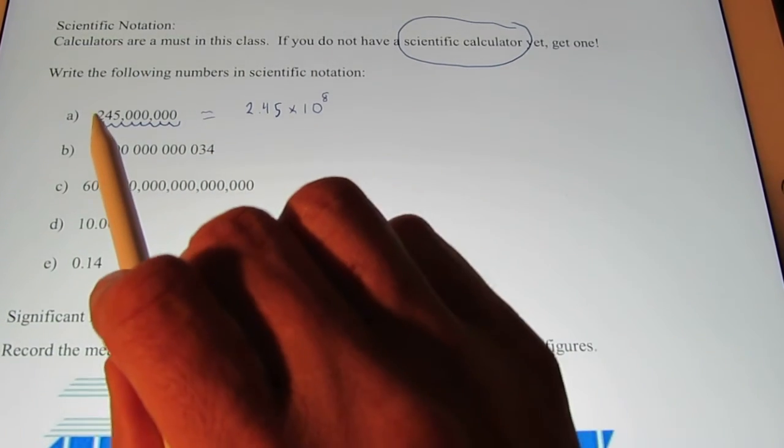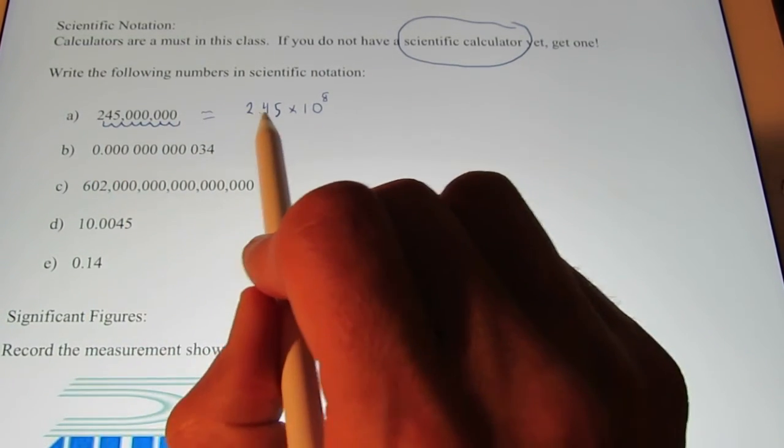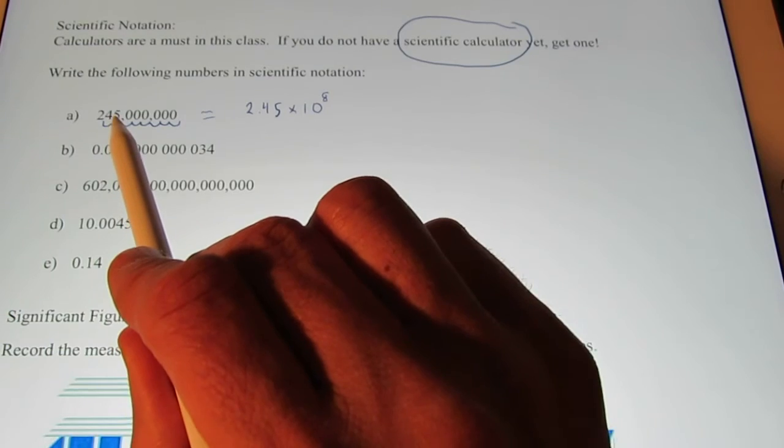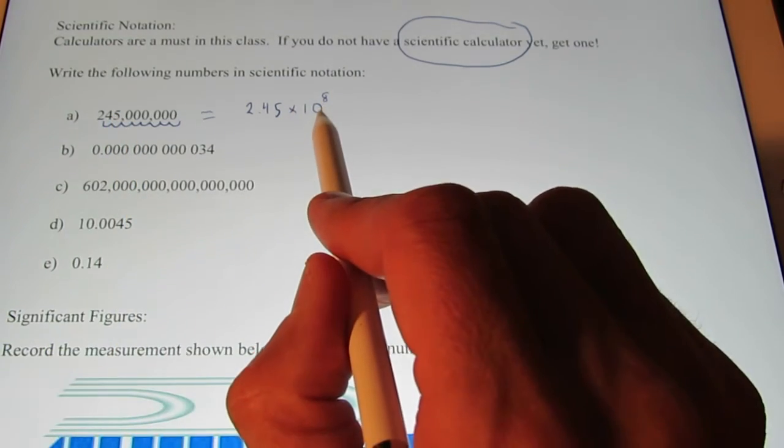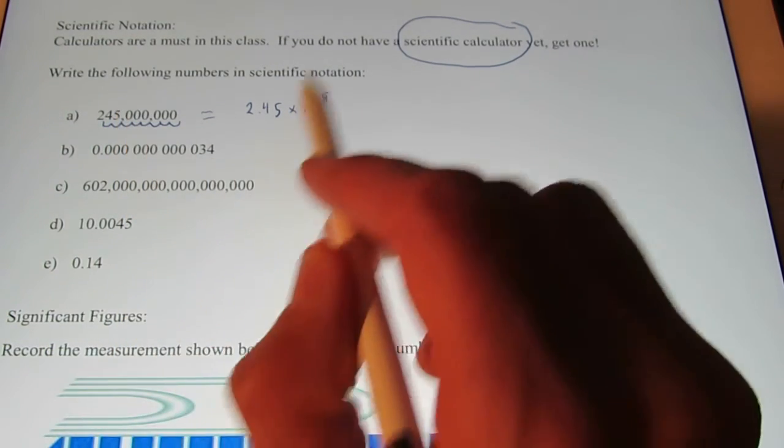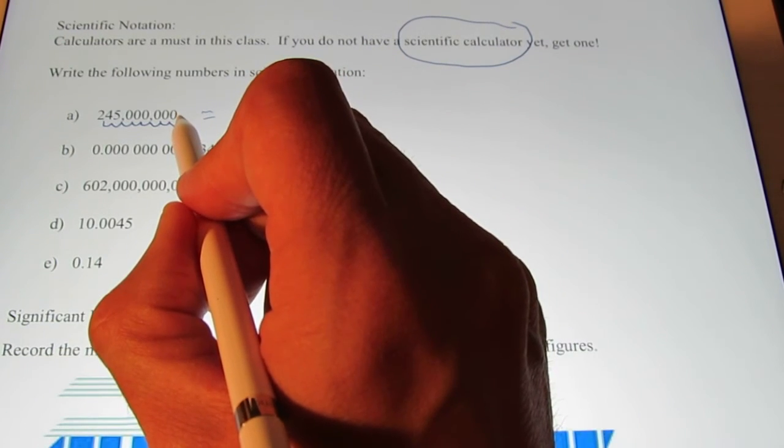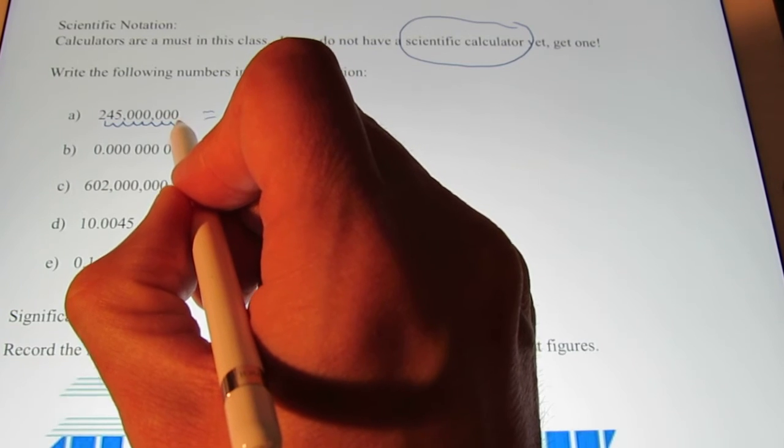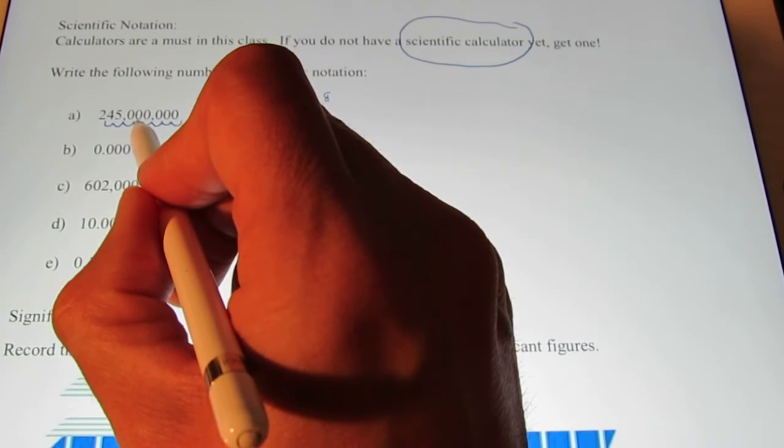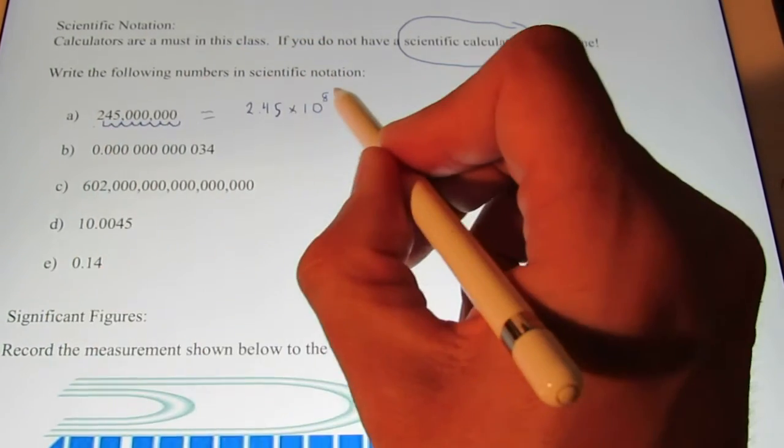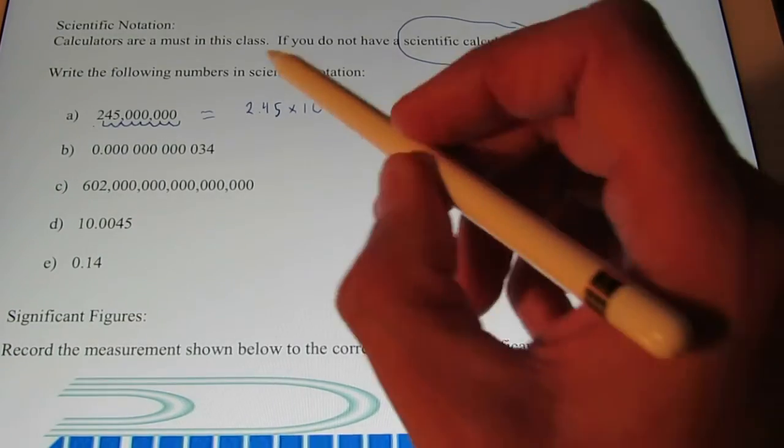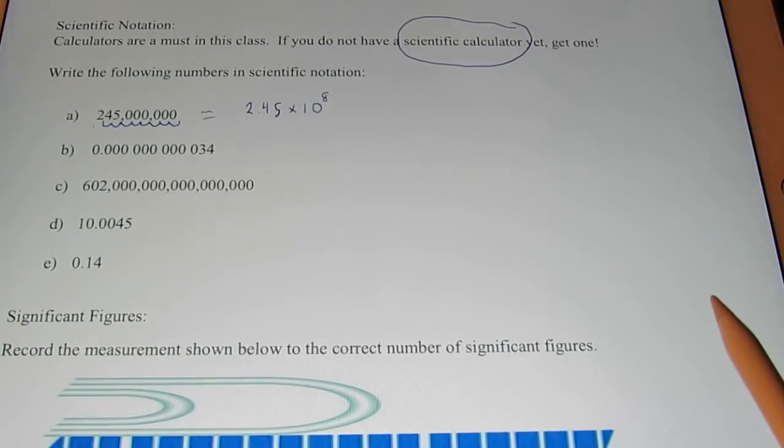Once again, I chose a number between 1 and 10, 2.45 that represents this number, and then I multiplied it by a power of 10 to equal this number. I got my exponent by simply counting over the number of places I had to move my decimal to get my 2.45. 1, 2, 3, 4, 5, 6, 7, 8. So I multiplied that by 10 to the 8th, and now these two numbers are equal to each other.